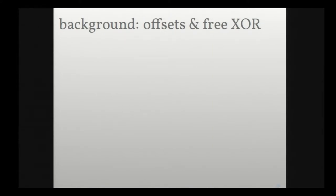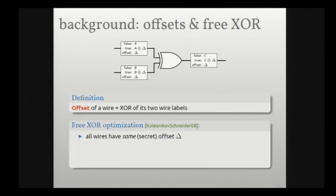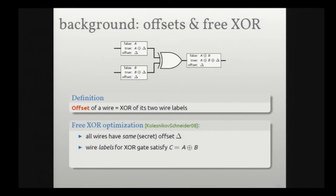Another way to reduce the size is free XOR. To understand free XOR, let me introduce an additional quantity called the offset of a wire — the XOR of the two wire labels on a wire is the offset, and I'll give that the special name delta. The idea of free XOR is to arrange things so that every wire in the circuit has the same secret offset delta, and if you take any combination of input wires and XOR them together, there are only two possible outputs, whose logic corresponds to that of an XOR gate.